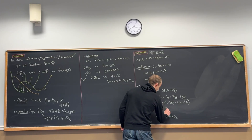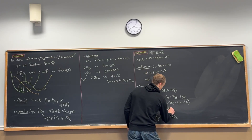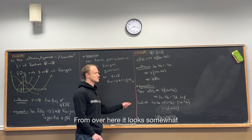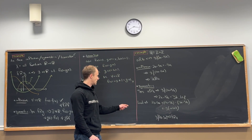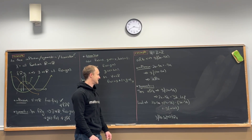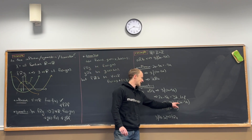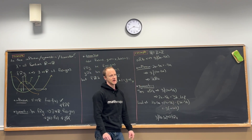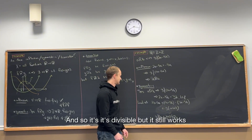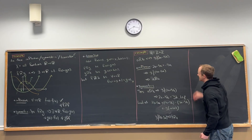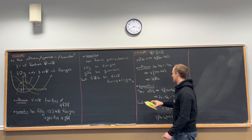We can factor a negative 3 out of this whole thing, and we'll have A plus B plus K. We can factor a 3 out of this, and by the equation right above, it's divisible by 3, so it works. That was way harder than it should be.